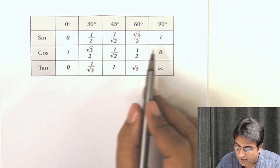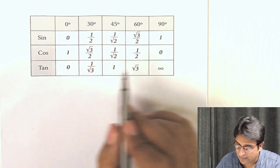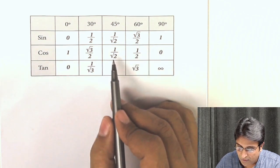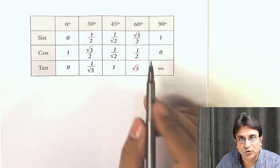The second row is just the first row reversed. So 1 was the last term, 1 is the first term. Root 3 by 2, root 3 by 2. 1 by root 2, 1 by 2, 0. So it's just the first row written reversed.